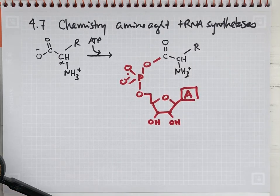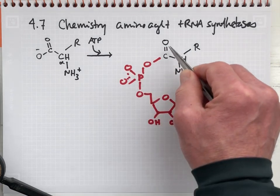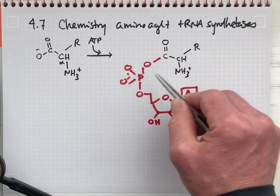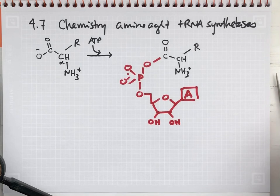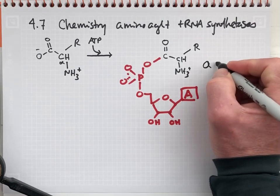So the AMP molecule is attached chemically through an acid-anhydride linkage of a phosphoric acid and a carboxylic acid linked together. There's a lot of energy in this bond, ample energy for driving the synthesis of peptide bonds. And so that's the initial activating group. This whole thing is called the aminoacyl adenylate.